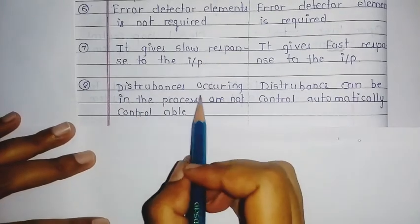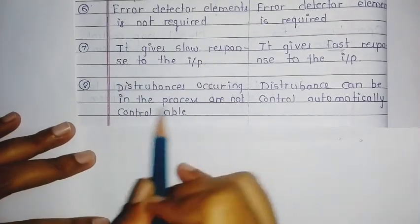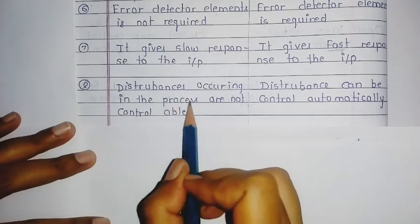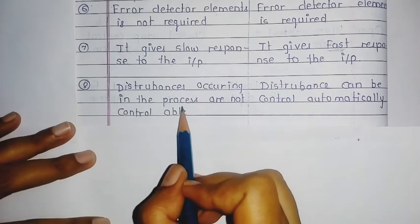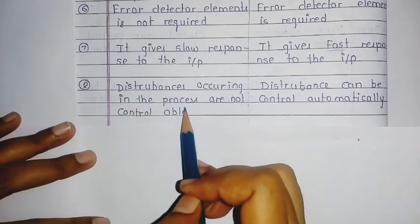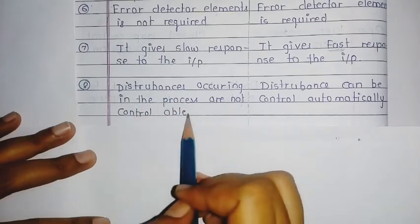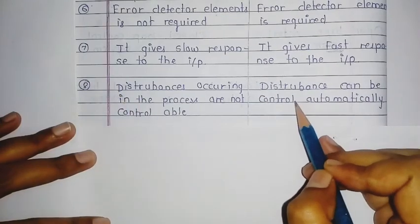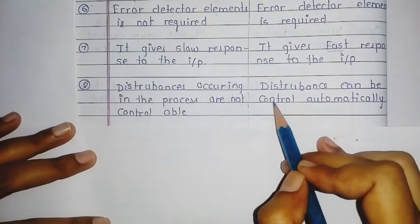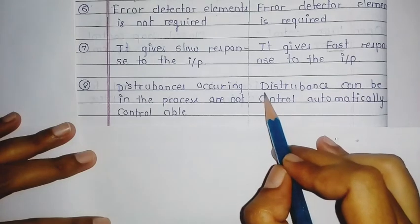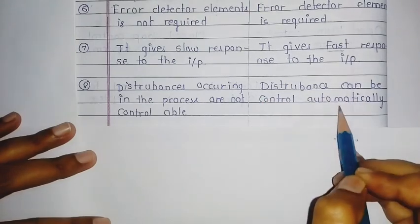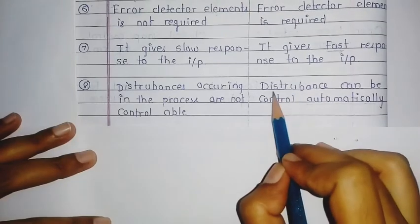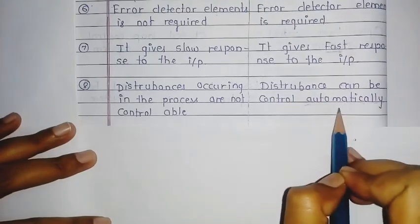The eighth point concerns disturbances. In the open loop system, disturbances occurring in the process are not controllable. In the closed loop system, if a disturbance occurs, it can be controlled automatically.